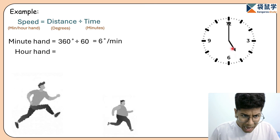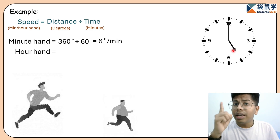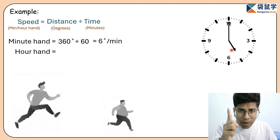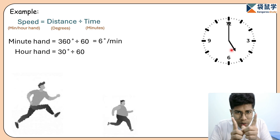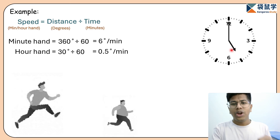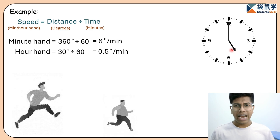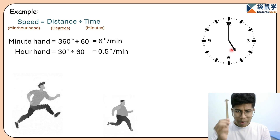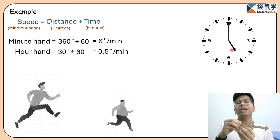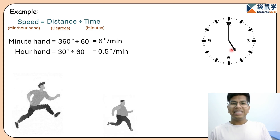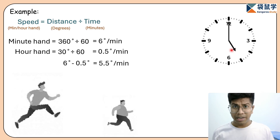Now for the hour hand: if it moves one interval, there are 12 intervals in 360 degrees, so one interval is 30 degrees. To cover one interval it takes 60 minutes, so the speed is 30 divided by 60, which is 0.5 degrees per minute. The minute hand travels 6 degrees every minute and the hour hand travels 0.5 degrees every minute. The chasing speed is 6 minus 0.5, which equals 5.5 degrees per minute.